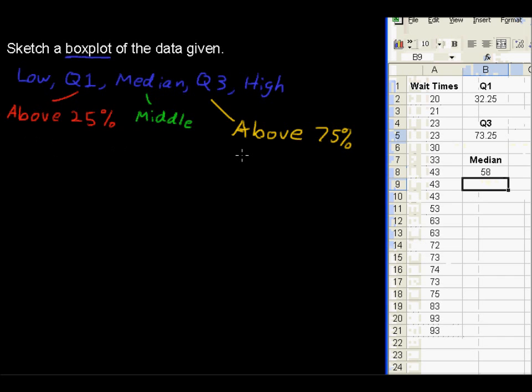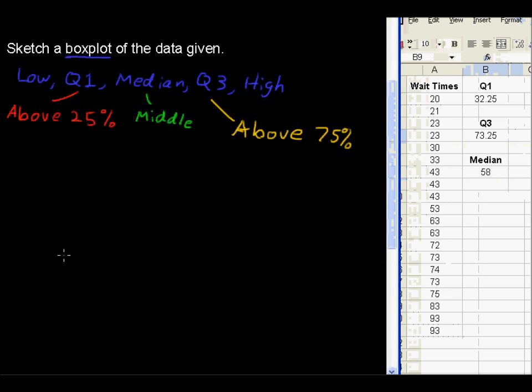Now, over here, to find or to use these numbers to make a boxplot. First of all, what you need is a scale. So we have our lowest at 20, we have our highest at 100, so I'm just going to go by 20s, just so I don't run out of space. Oh, I can go by 10s. Let's do it.